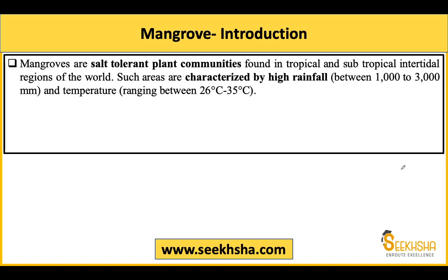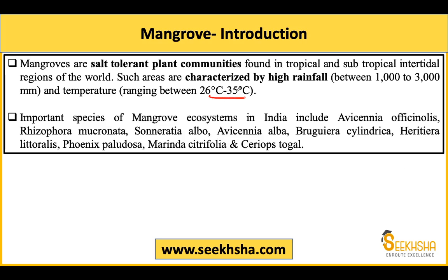Next topic aata hai hamaara - mangroves. Mangroves basically salt tolerant plants hote hain, tropical aur subtropical regions mein, intertidal regions mein aapko milte hain, high rainfall areas mein, temperature 26 se 35 degree Celsius pe. India mein important species hain jinka zikr India State of the Forest Report mein tha - for example, Rhizophora mucroneta - ye mangroves ki species hai. Aisa question puchh sakta hai ki Rhizophora mucroneta kiska species hai - option A mangroves, B rice, ya koi weed.